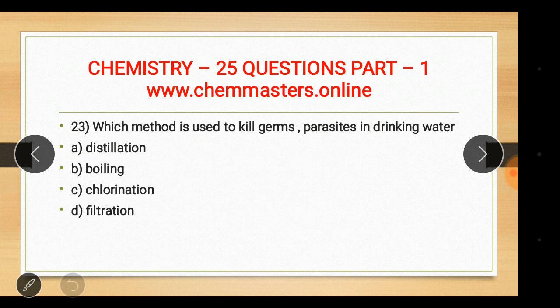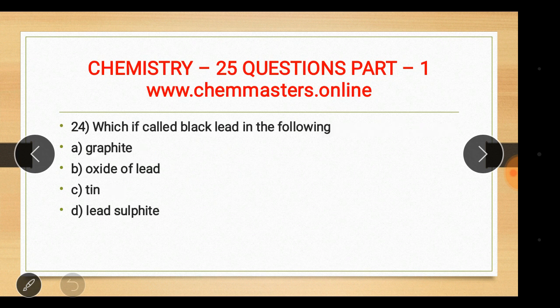Question twenty-three: which method is used to kill germs and parasites in drinking water? The answer is chlorination. By sending chlorine gas into water, it kills germs and parasites. The other options were distillation, boiling, and filtration.